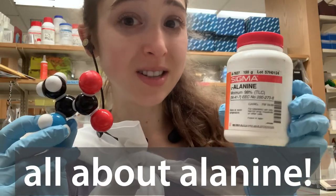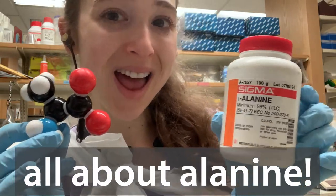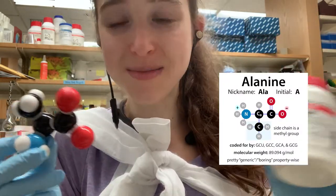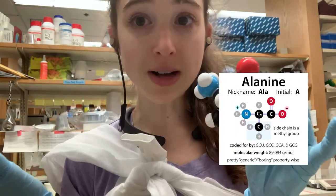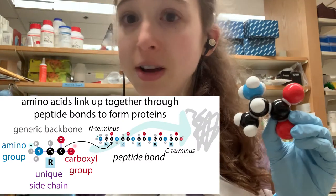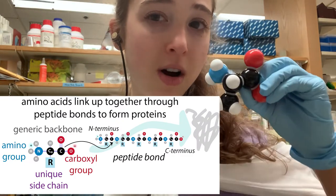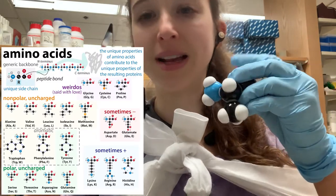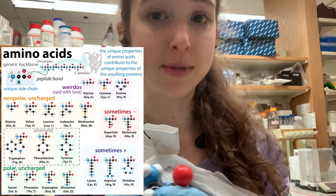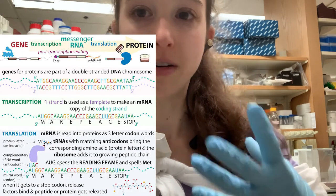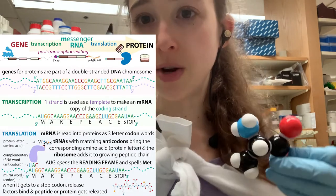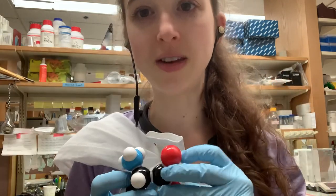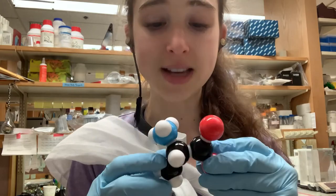It is the season to talk amino acids. Fa la la la la la la la alanine. Alanine is the second amino acid we're going to talk about in 20 days of amino acids. Amino acids are protein letters, among other things. There are 20 common amino acids that are genetically encoded, and the one we're going to talk about today is alanine.